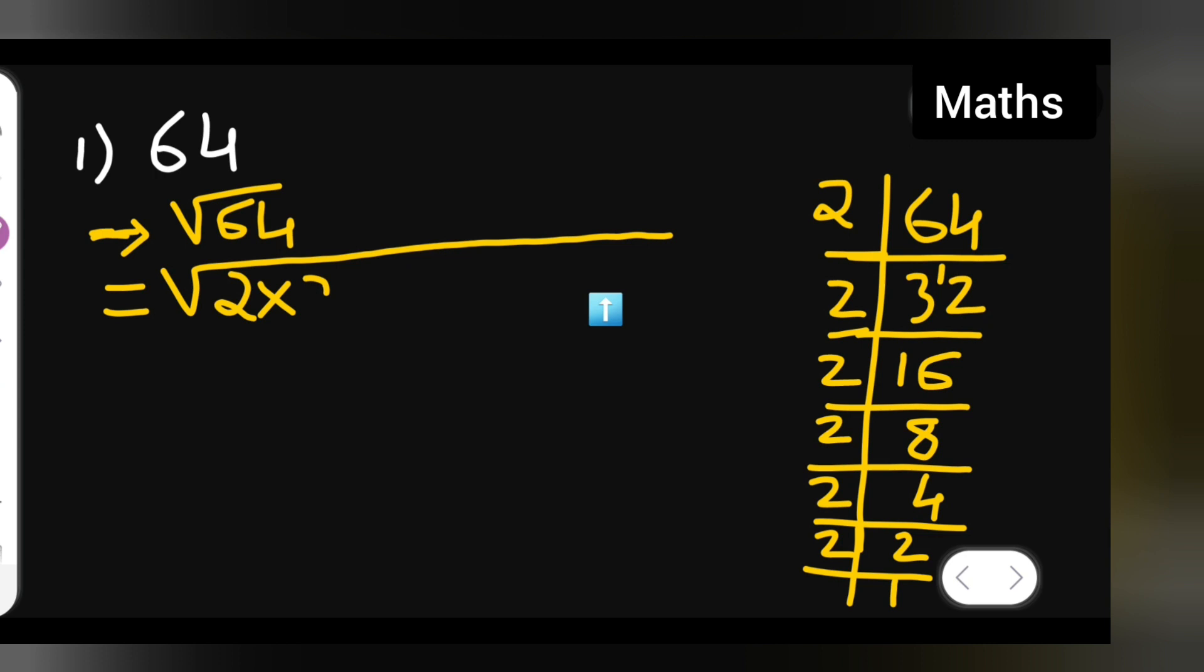2 multiplied by 2. How many times 2 is there? 1, 2, 3, 4, 5, 6. Six times, right?